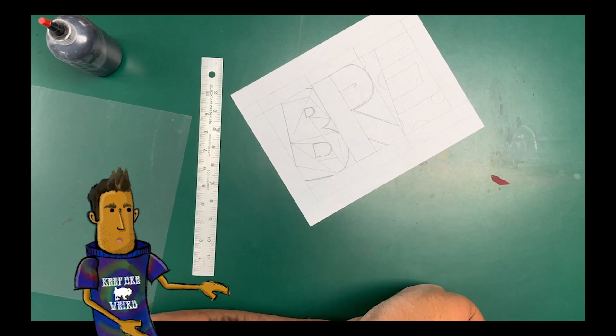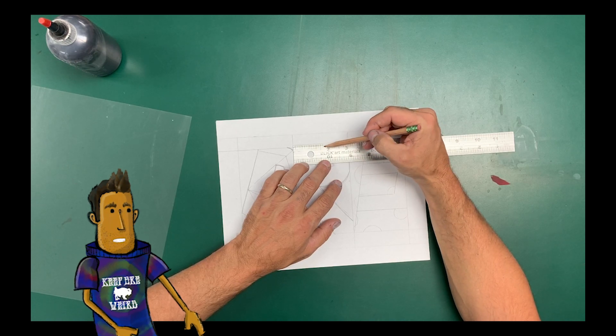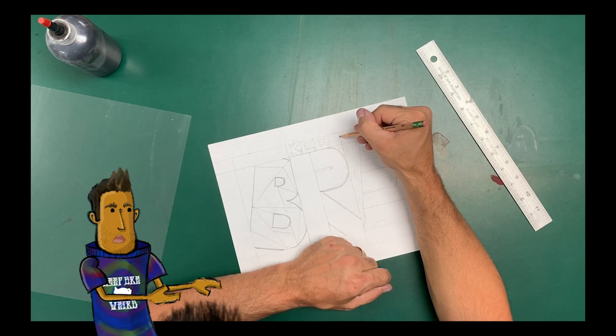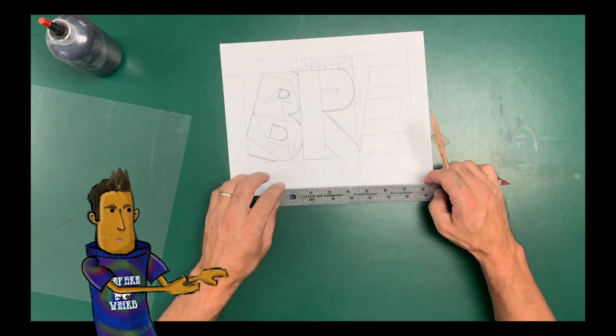And then I created little chunks inside of these. You're going to want to make little sections inside, but not too small. You can see when I'm drawing here, I actually wrote Keep BRE weird, but I ended up not using those because they're too small.